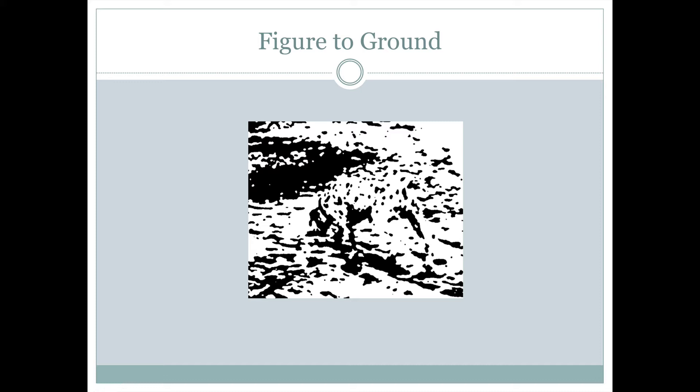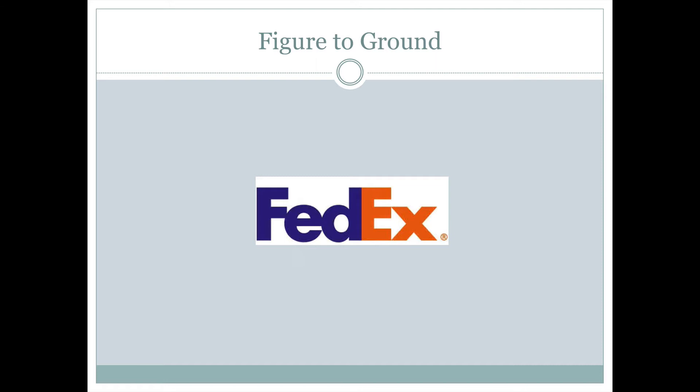This is a famous example of figure to ground. This is the FedEx logo. Most people, when they look at this, see the words FedEx, but there's also an arrow here, which once you see it really stands out. It's sort of playing with the figure to ground, making whether you see this as the figure or the ground is ambiguous.